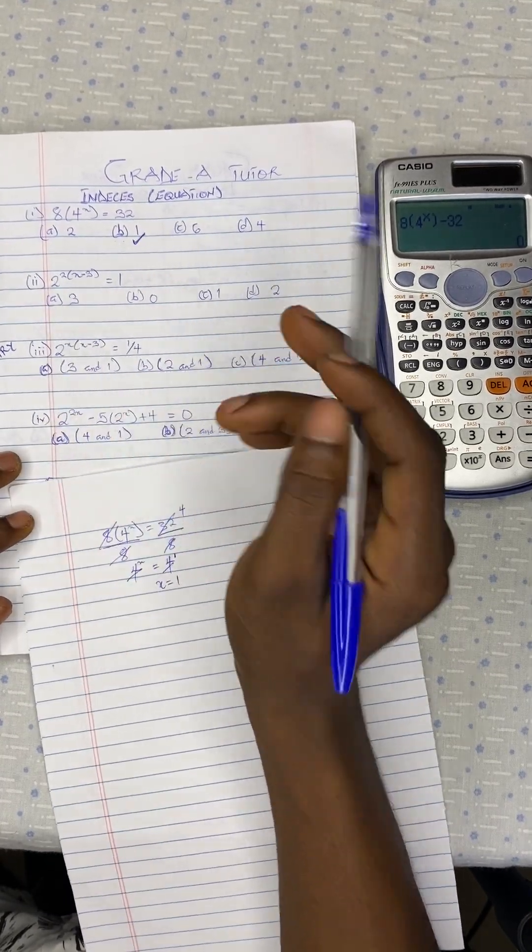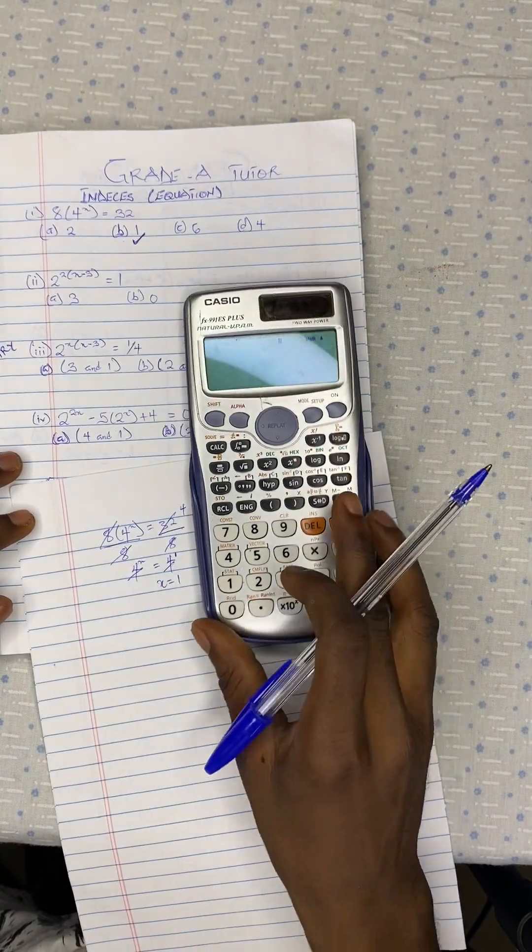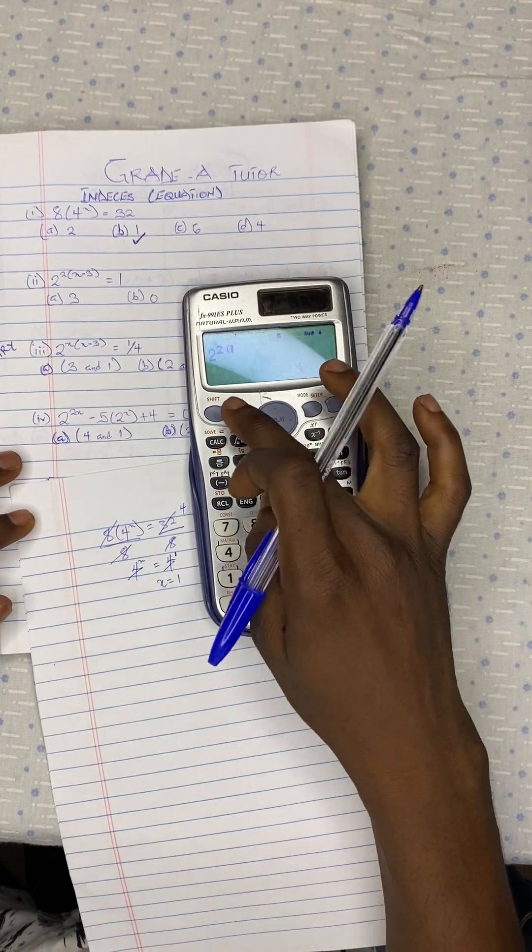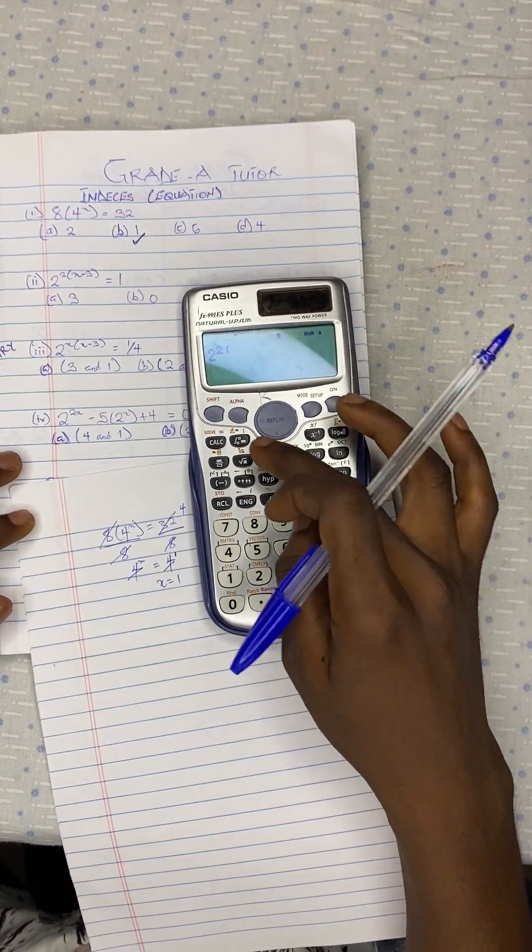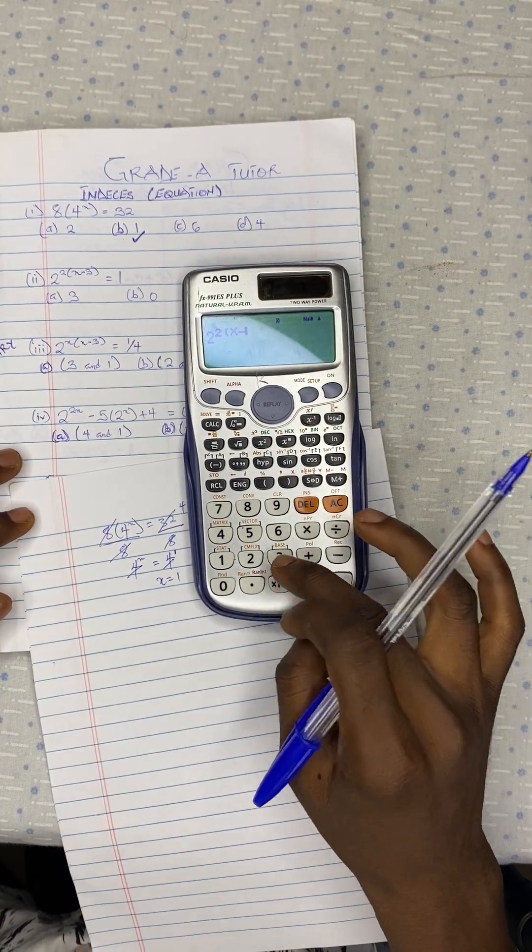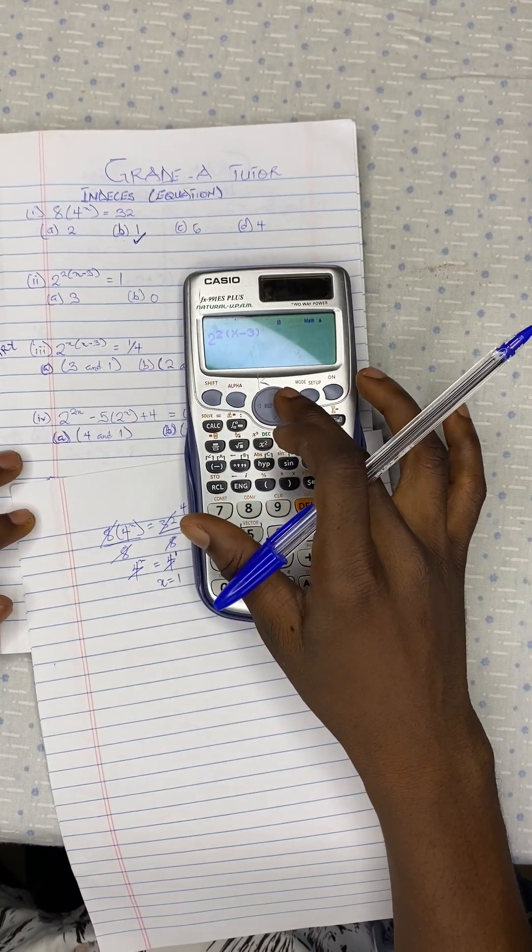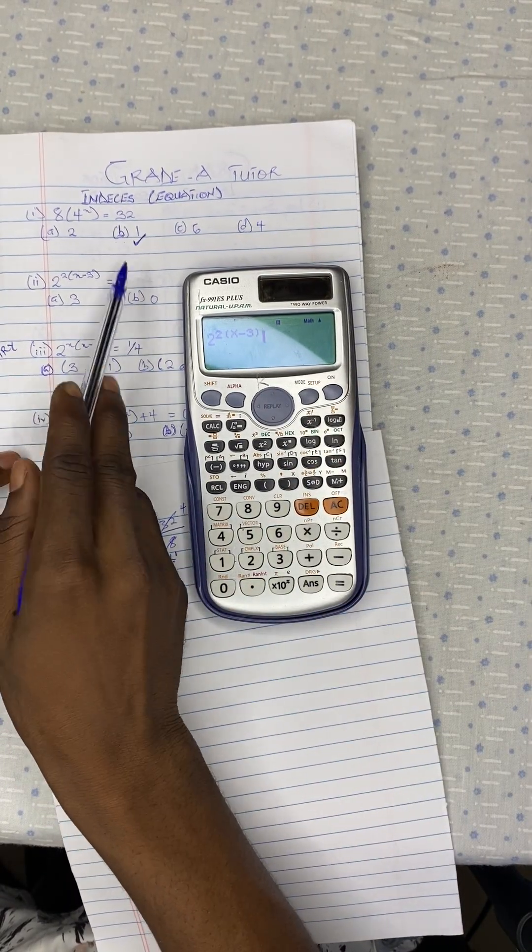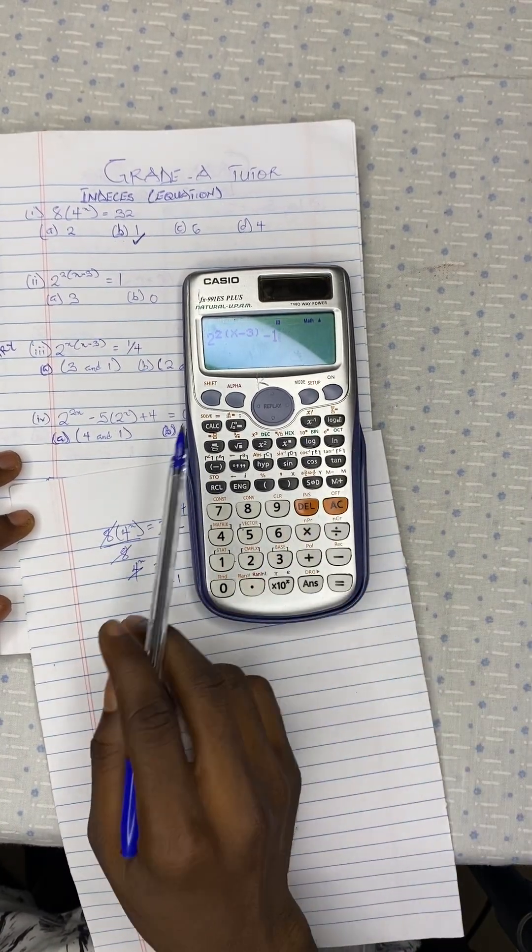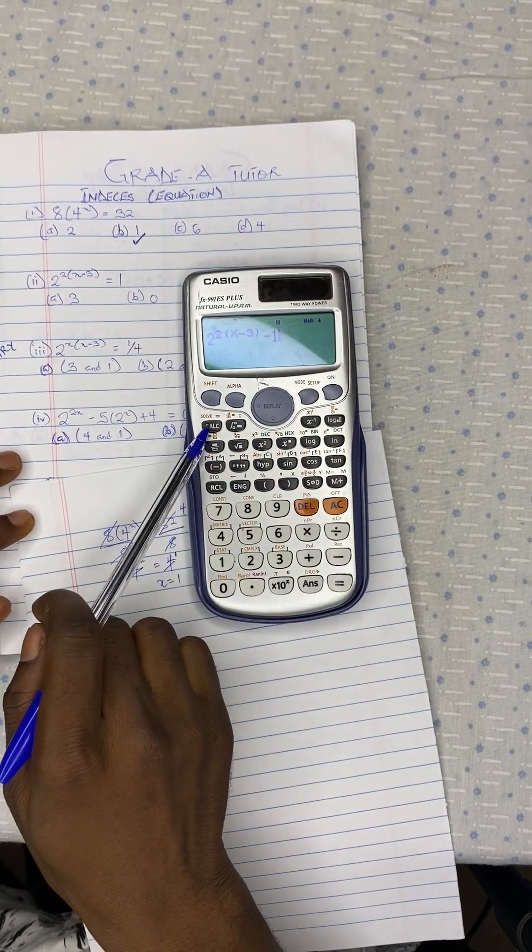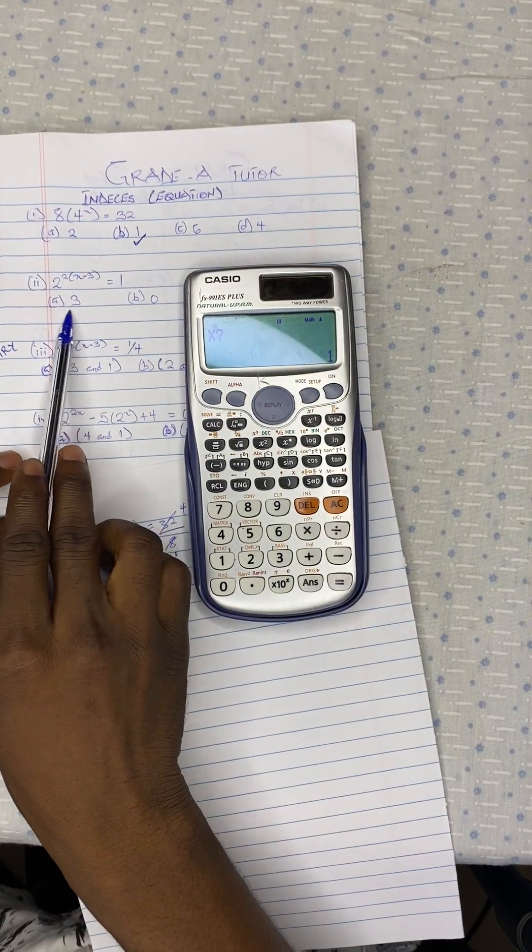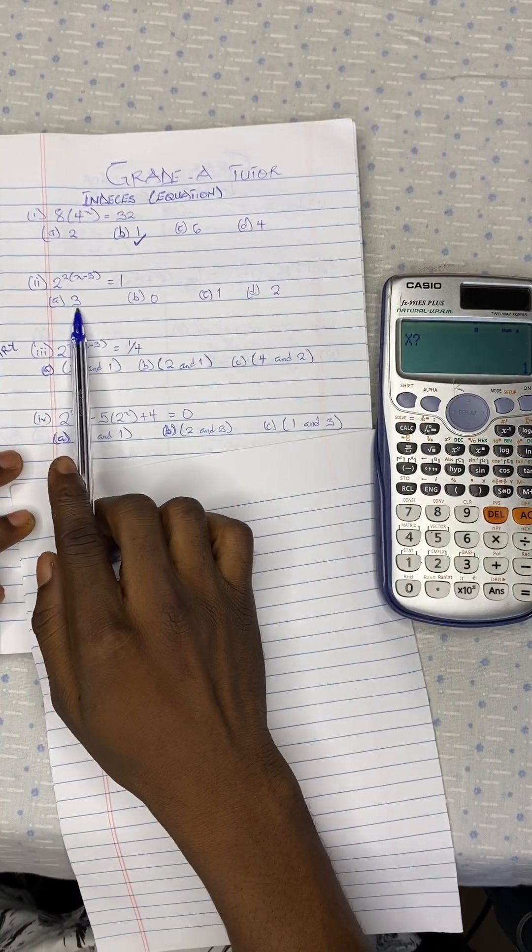Let's look at question 2. Let's also input the question on the calculator, which is 2 exponent 2 bracket open x minus 3. You close your bracket. Then this is 1. So when it comes to the left-hand side, it is going to be minus 1. So now that you are done with the question, you press on this key.